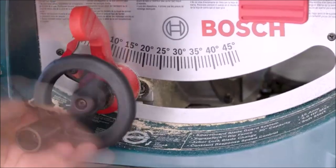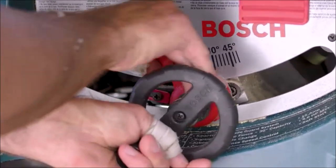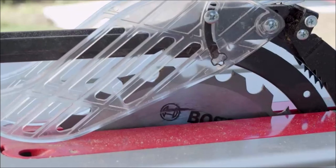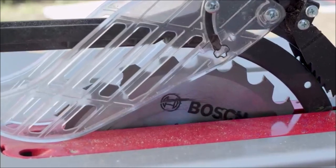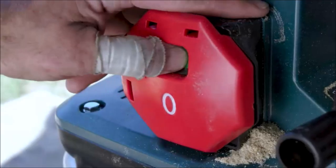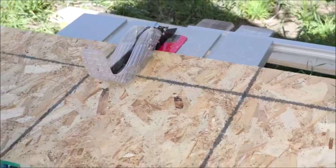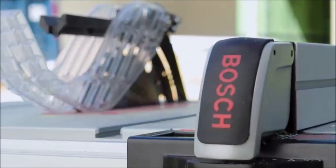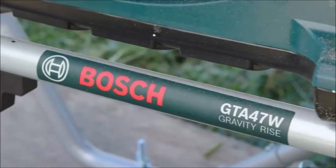The Gravity Rise Wheeled Stand is job site ready with heavy-duty construction and 8-inch treaded rubber composite tires. The Smart Guard System adds safety with adjustable riving knife, anti-kickback pawls, and non-obstructed view barrier guard assembly.